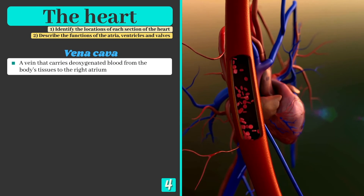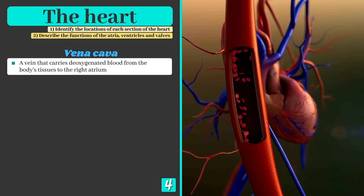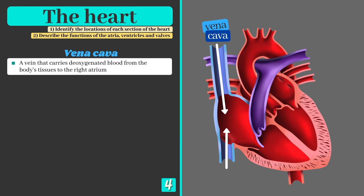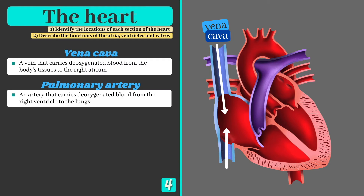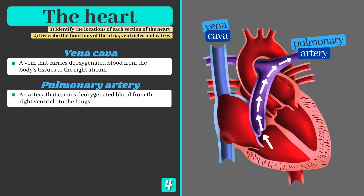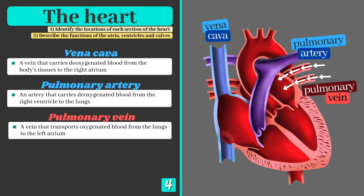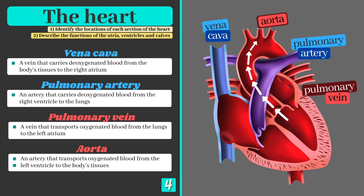There are four main blood vessels that connect the heart to the rest of the body. The vena cava is a vein that delivers deoxygenated blood from the body's tissues to the right atrium. From the right ventricle, blood leaves the heart via the pulmonary artery which transports blood to the lungs. Blood then returns from the lungs via the pulmonary vein and is deposited into the left atrium, before leaving the heart through the aorta — the largest artery in the body, which carries oxygenated blood to the tissues.